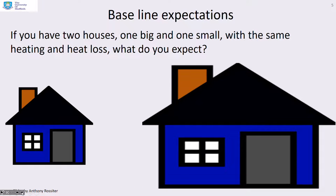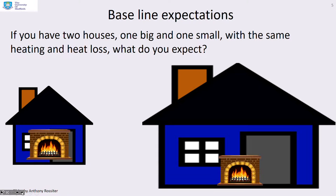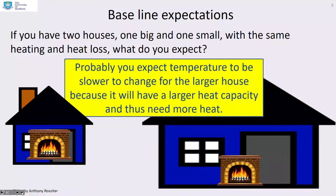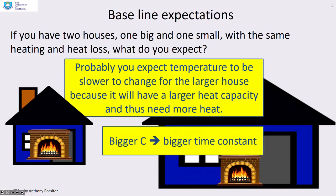What are our baseline expectations? If you have two houses — one big and one small — and they both have the same heating and heat loss, you'd probably expect the temperature to change more slowly for the large house. It's going to have a much larger heat capacity and therefore need more time to heat up. In other words, if you make C bigger, you expect the time constant to be larger, or slower.